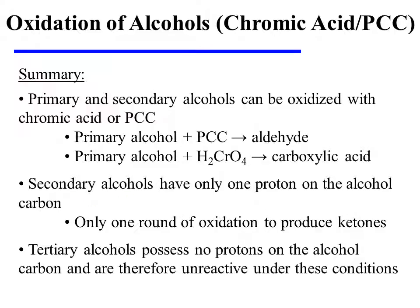On the other hand, secondary alcohols have only one proton on the alcohol carbon, and therefore only one round of oxidation is possible. So secondary alcohols yield ketones regardless of whether they are treated with PCC or chromic acid. Tertiary alcohols possess no protons on the alcohol carbon, and this makes oxidation impossible under these conditions.